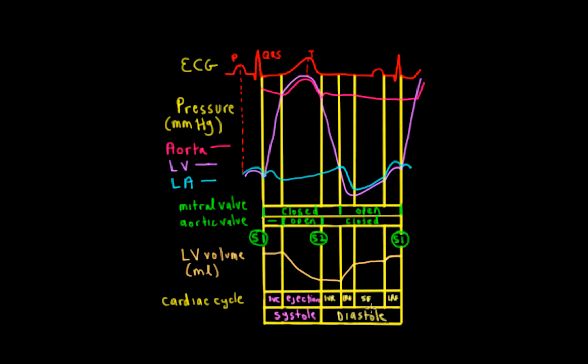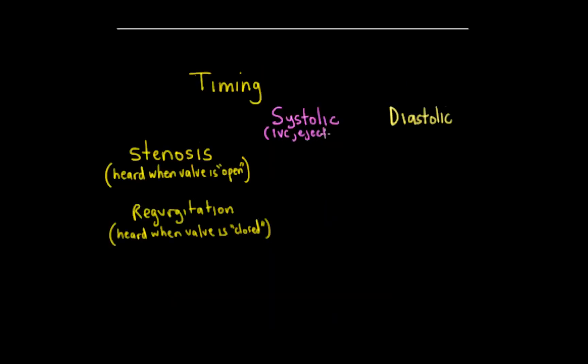Between S1 — the closure of the AV valves — we have systole, then closure of the semilunar valves at S2, the onset of diastole, and then it repeats back to S1 again. All of these opening and closing events are caused by pressure differences between the left ventricle, left atrium, and the great arteries — in this case the aorta. So we can put in for systole: IVC and ejection, and for diastole: IVR and filling. We can categorize these murmurs into systolic or diastolic.